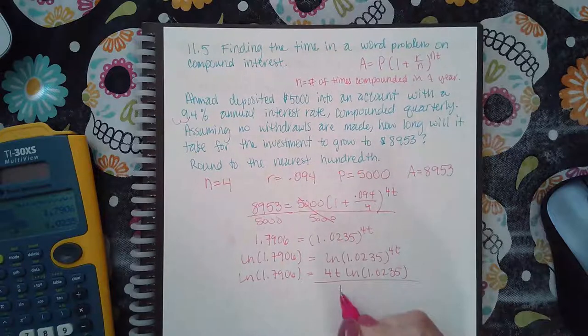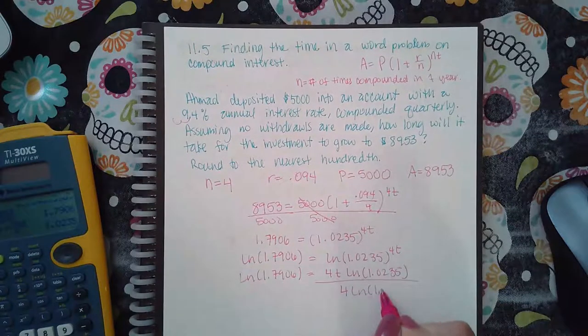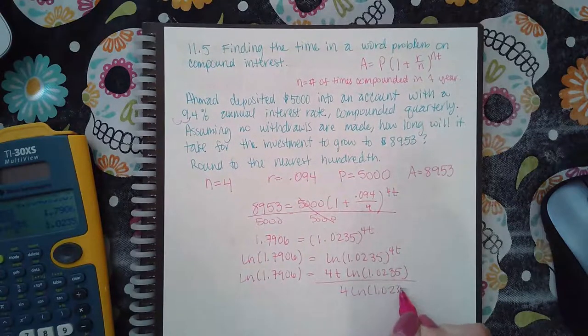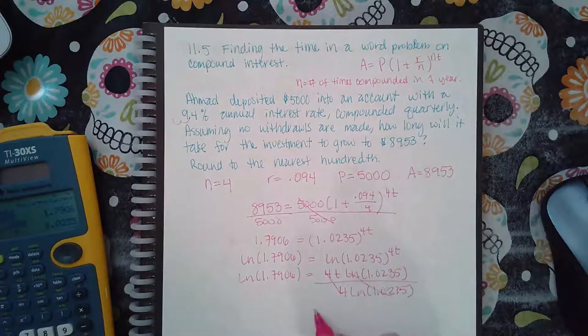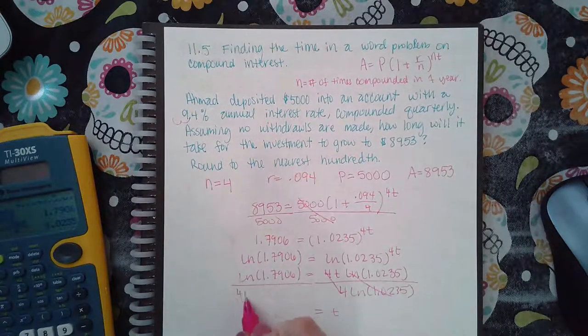And then I'm going to divide by both the 4 and the LN of 1.0235 so that I can get the T all by itself. But I got to do the same thing on this side.